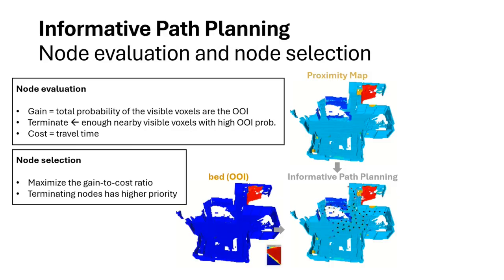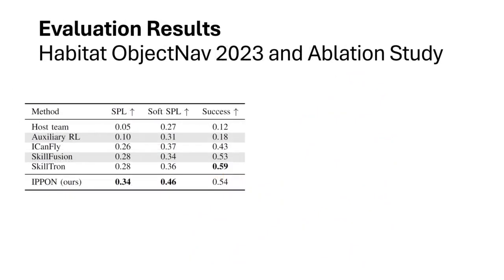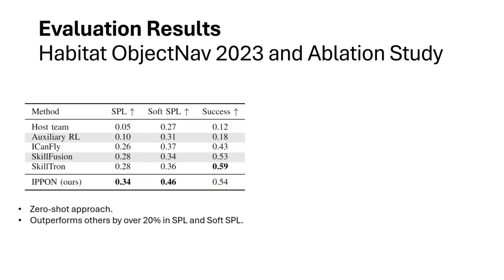We evaluate our planner in the Habitat Object Nav 2023 challenge. Unlike other teams trained on this dataset, our method follows a zero-shot approach. Still, it outperforms the previous state-of-the-art by more than 20% in SPL and soft SPL. Furthermore, unlike others, our planner supports open vocabulary object goal navigation.